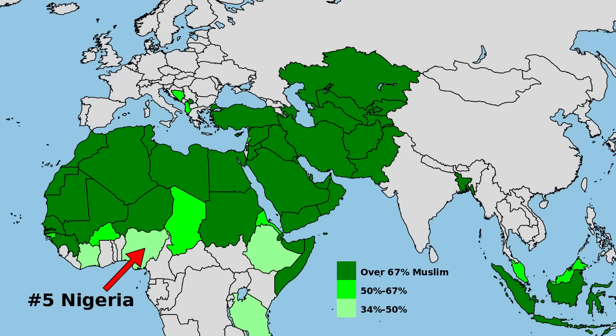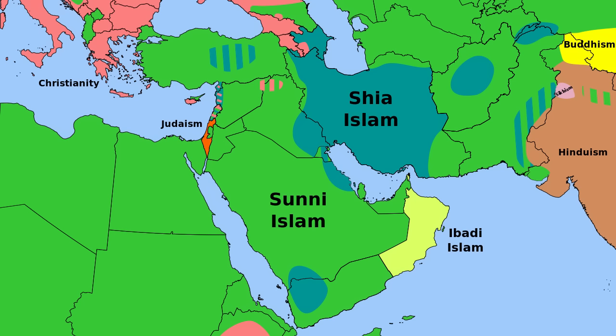The country with the fifth highest number of Muslims is Nigeria, with a total population of 190 million, which is about 40% Muslim, mostly in the north, representing over 90 million people. In the Middle East, most of the countries are majority Muslim, but Israel is majority Jewish. There are also significant Christian minorities all over the Middle East, most notably in Lebanon, where over 40% of the population is Christian.